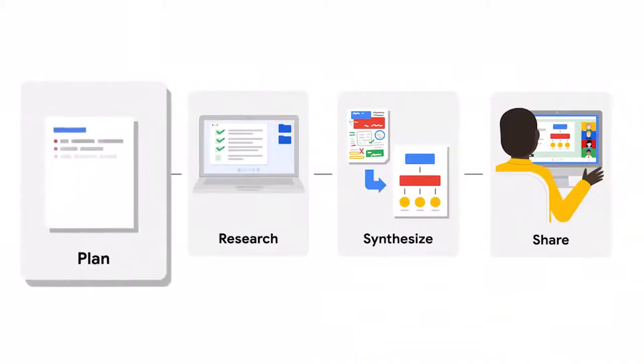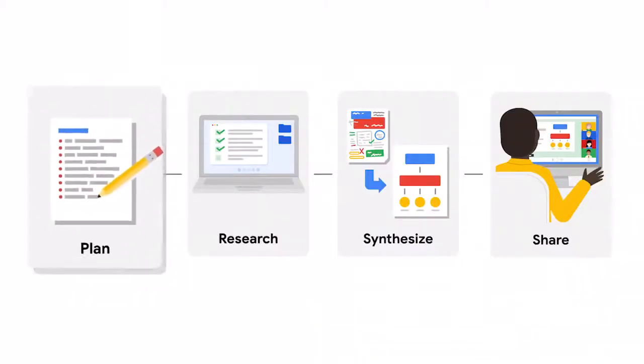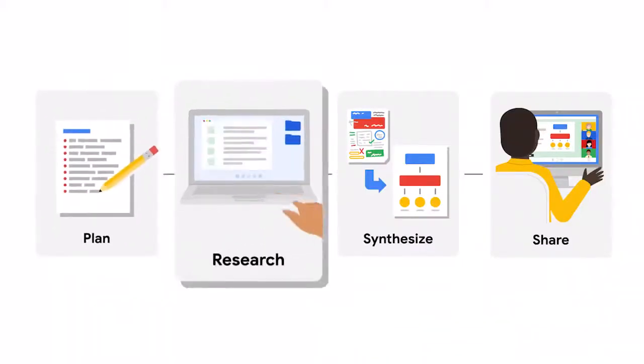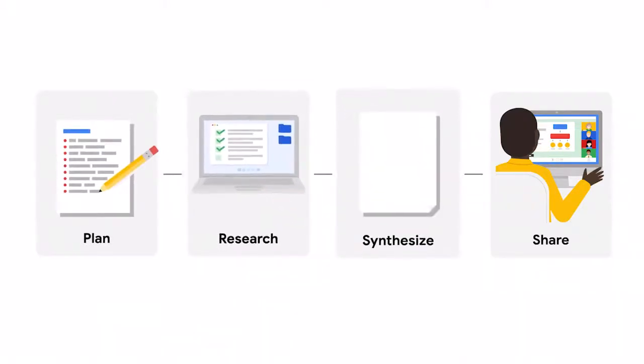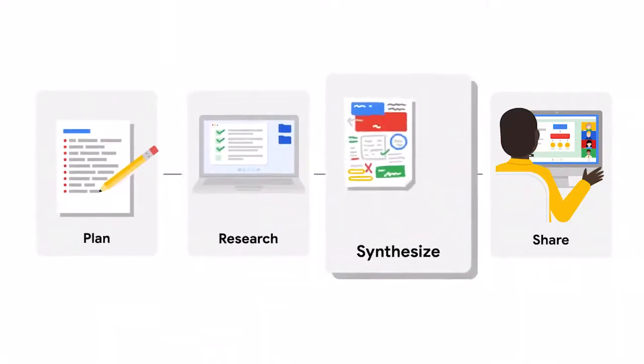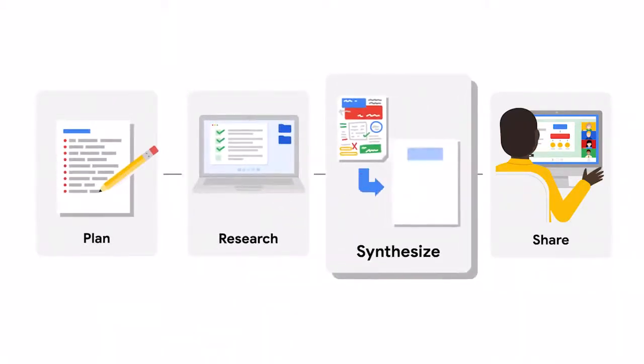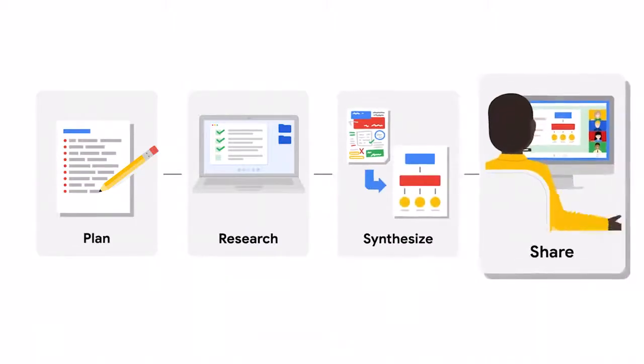There are four steps in a UX research study, which we'll cover in depth throughout the course. In this video, we'll simply set up the steps. Step one: plan the study. Step two: conduct the research. Step three: analyze and synthesize the results. And step four: share and promote the insights. Here's a little introduction to each.